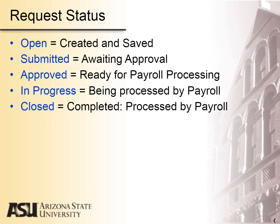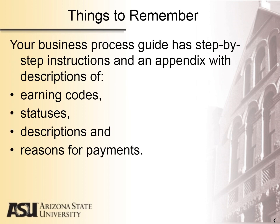There are five request statuses. An Open status means the action is created and saved. A Submitted status means the action is waiting for approval. An Approved status means the action is ready for payroll processing. An In Progress status means the action is being processed by payroll. A Closed status means the action has been processed by payroll. Your Business Process Guide has step-by-step instructions and an appendix with descriptions of earning codes, statuses, descriptions, and reasons for payments.